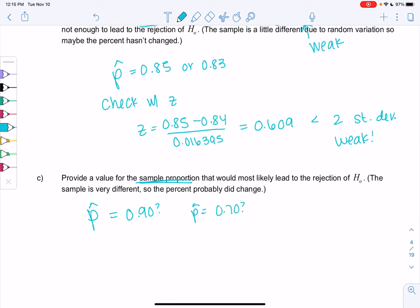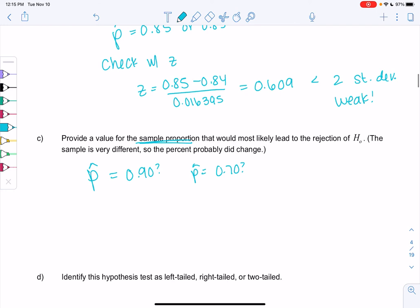70%, maybe the other direction. Right, something a little bit farther from 84. Again, it's a little bit of a guess and check. These aren't the only solutions. But let's check the z-score for 90.